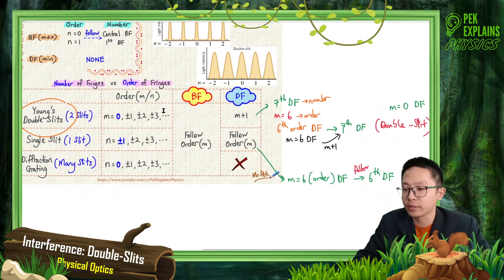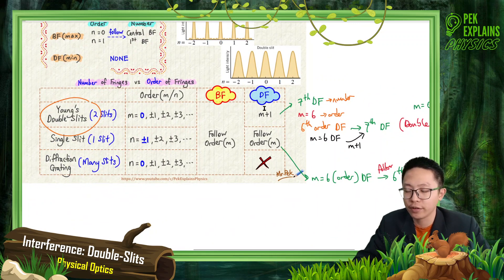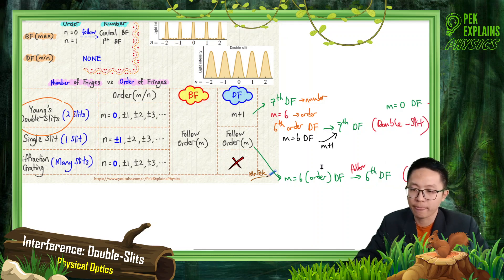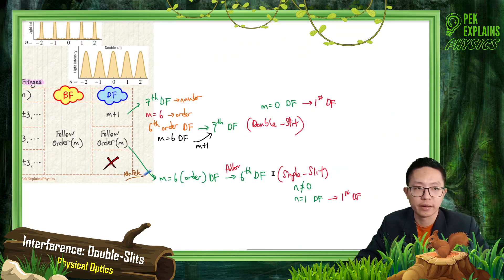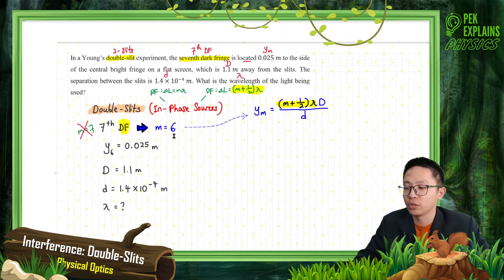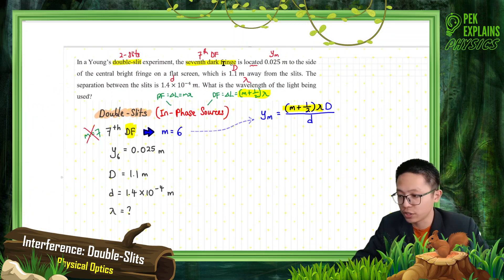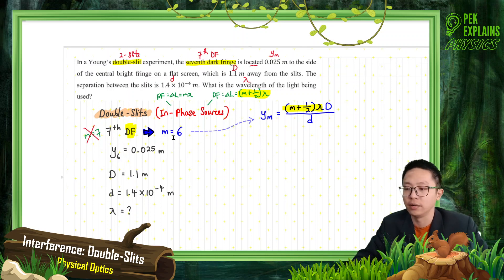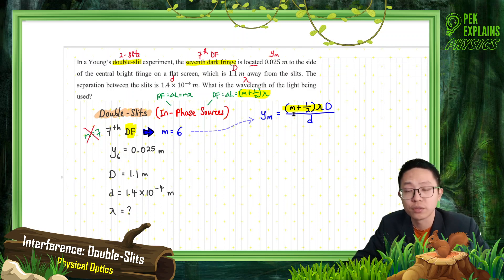So for double slit dark fringe, it's order plus 1 to get the fringe number. For single slit, it follows order. So we have a 7th dark fringe here, which means the order M is 6. Order plus 1 gives 7. So the order is 6 - later on, don't put 7, you must put 6.